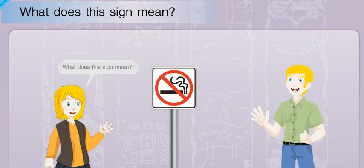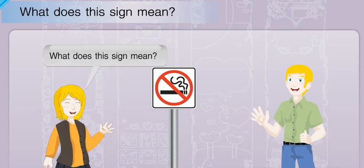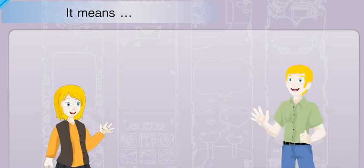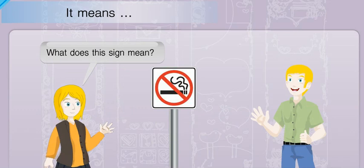You can understand the subject, but if you don't know the meaning, you can ask an adult by using the phrase: What does this sign mean? For example: What does this sign mean? To answer the question, we can state the meaning of each sign by starting with: It means — for example, What does this sign mean? It means no smoking.